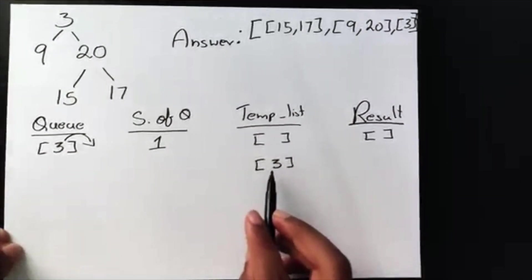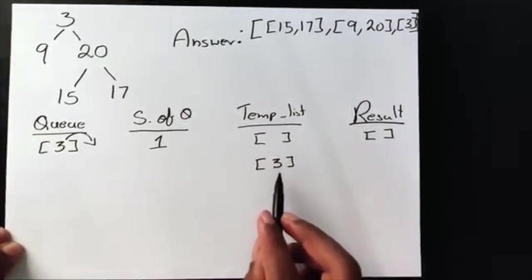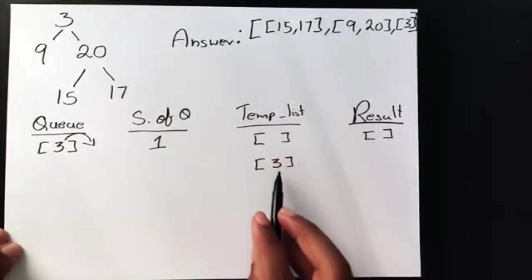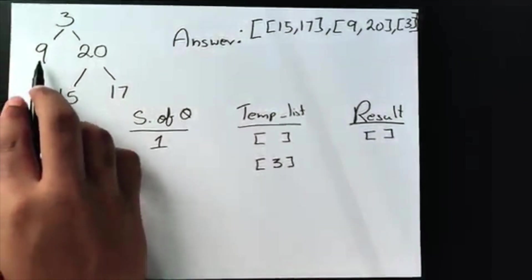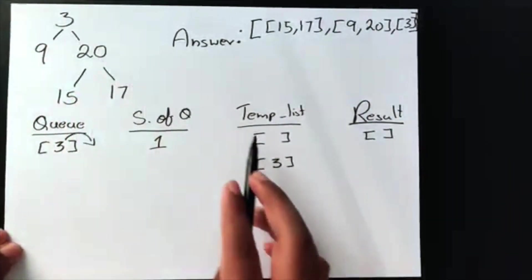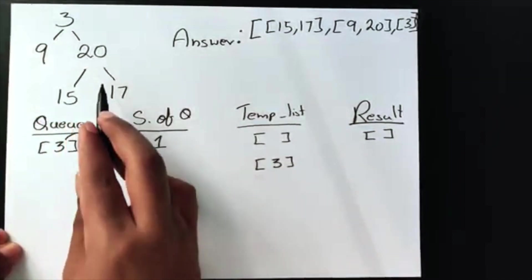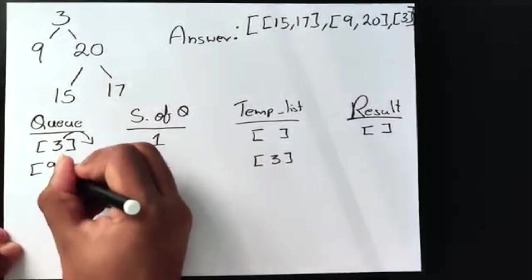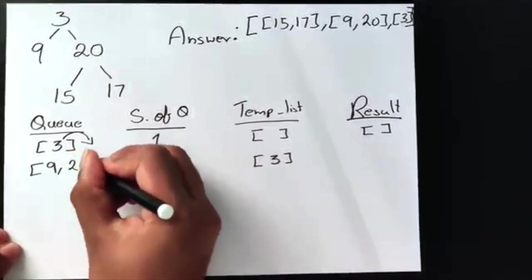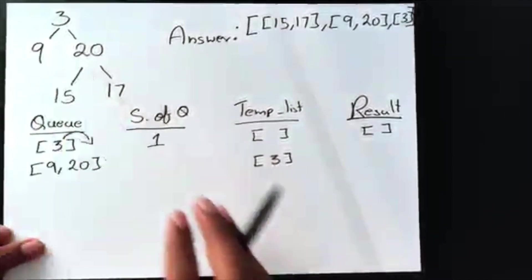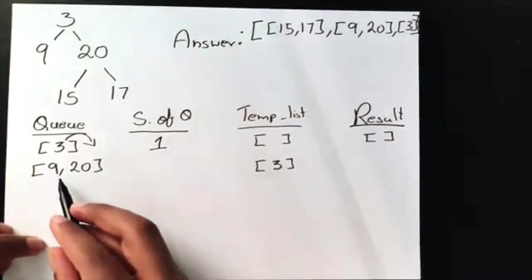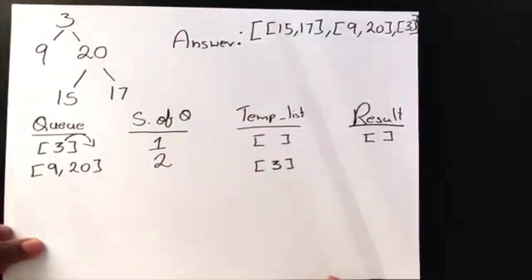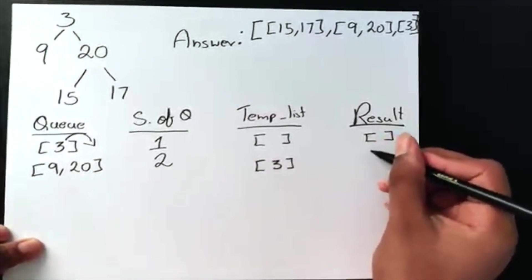After adding 3 to the temp list, we're going to look for its children nodes. The children of 3 are 9 and 20, so we add those to our queue. Now the queue consists of 9 and 20 — notice we're going left to right. The size of the queue changes from 1 to 2. Our result is still empty for now.